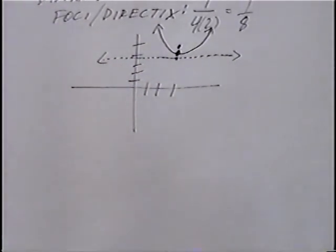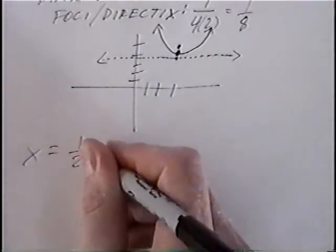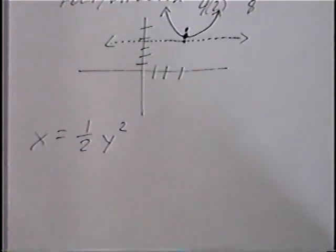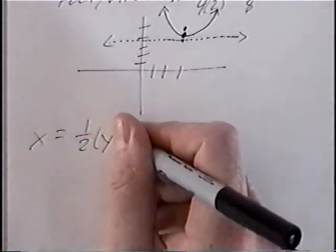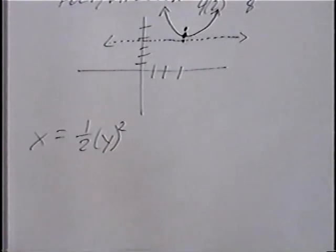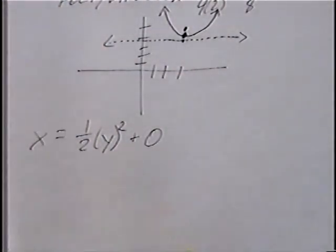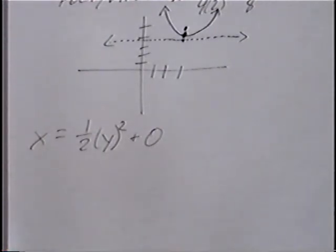Second and last question for this section. The equation is x equals 1/2 y squared. This equation is also in standard form. If you wanted to, you can put parentheses around the y value, and there's no number at the end, but you can put a plus zero for the value at the end. The x and the y are flipped for this one, which will change the direction of the parabola.